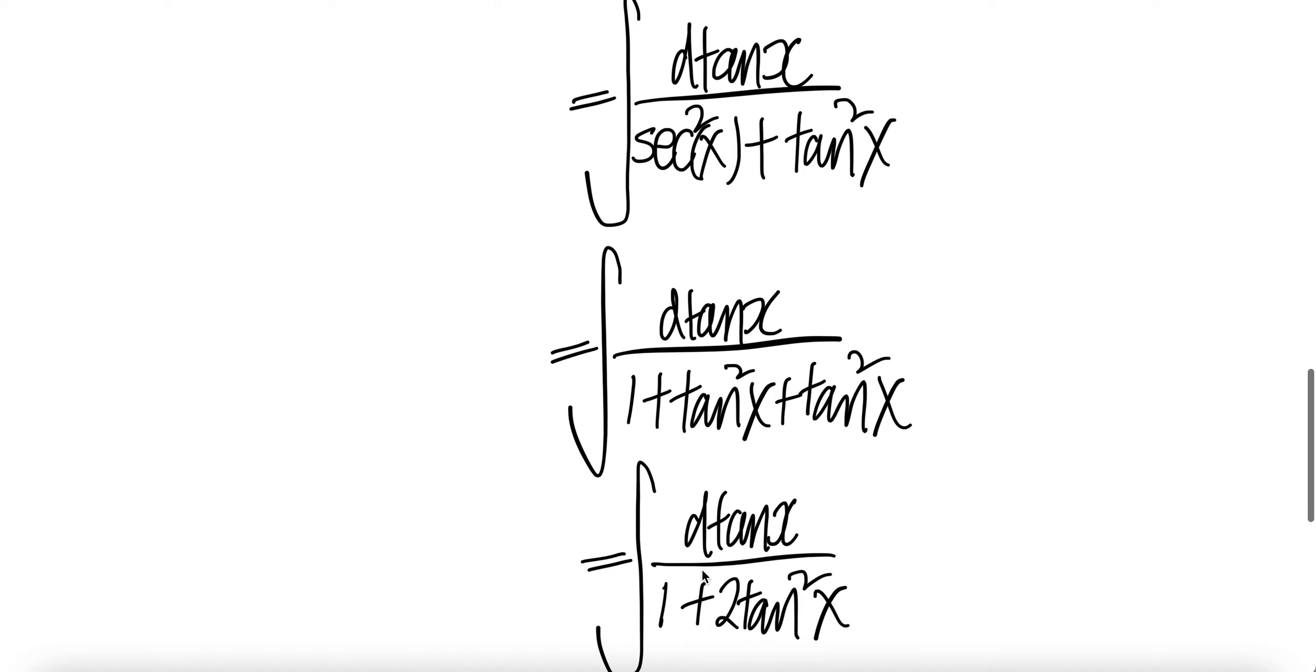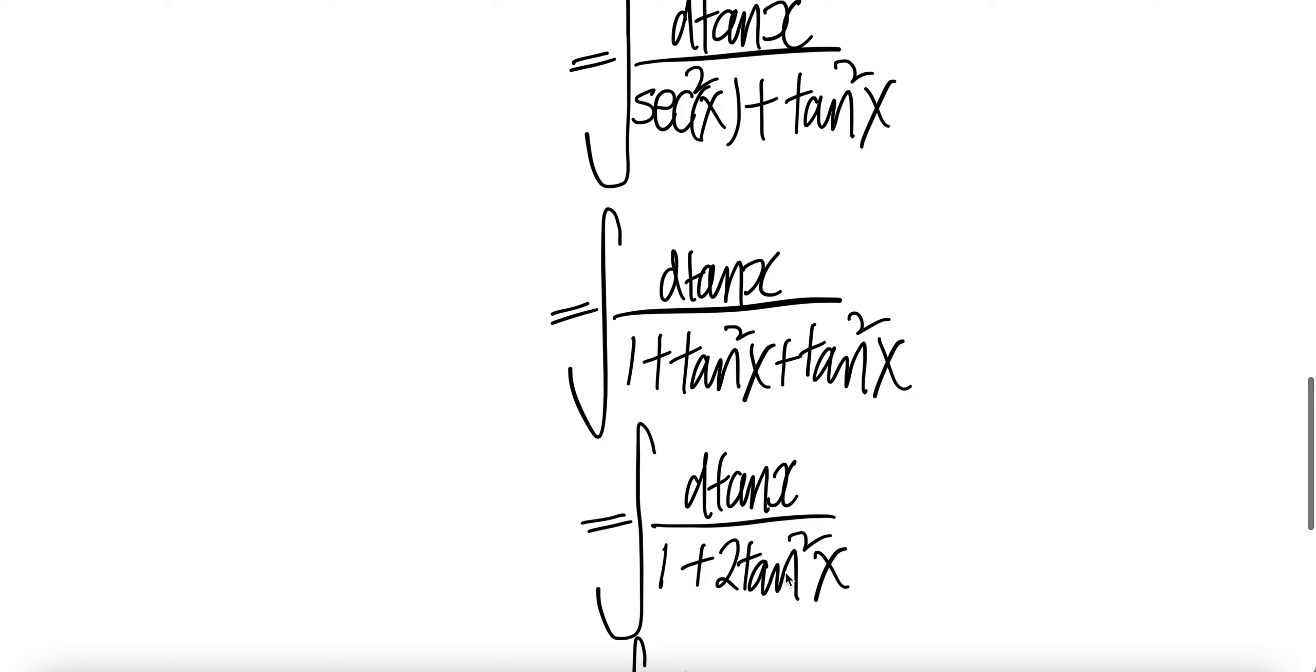Rewrite this as 1 plus tangent squared x using the identity. Now you have 2 of these. You get 2 tangent squared x and 1.